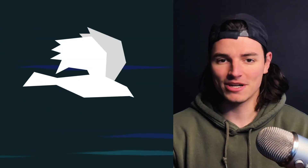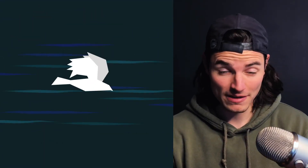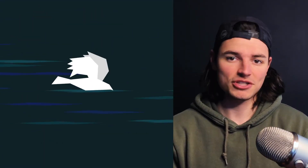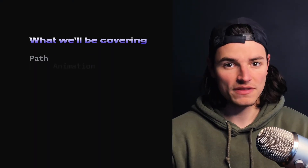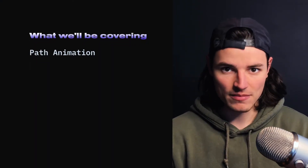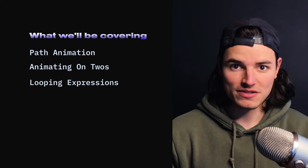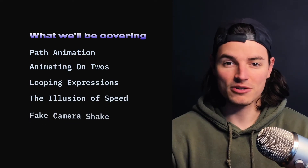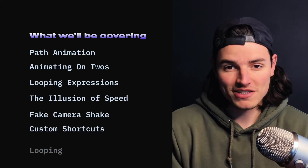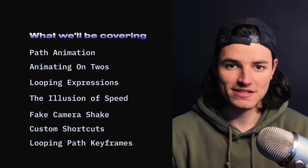Hey, what's up? It's Chris. I'm going to show you how to animate this high-speed flying bird using shape layers and path keyframes in After Effects. We'll be covering things like path animation, animating on twos, looping expressions, how to create the illusion of speed, how to create a fake camera animation, a few custom shortcuts, and all sorts of goodness. So let's get right into it.